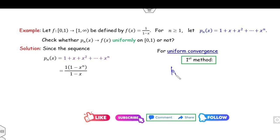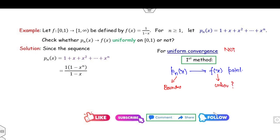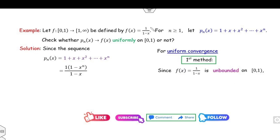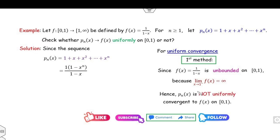To check uniform convergence: pn is bounded. If I prove f(x) = 1/(1 − x) is unbounded, then pn is not uniformly convergent to f. Indeed, as x → 1⁻, 1/(1 − x) → ∞, so f is unbounded — you can also see this from the graph. Since pn is bounded, converges pointwise, and f is unbounded, pn is not uniformly convergent to f(x).